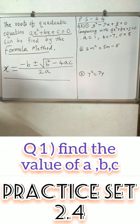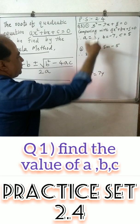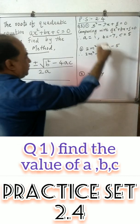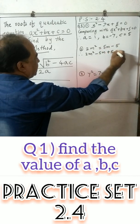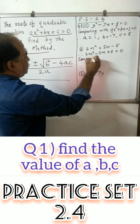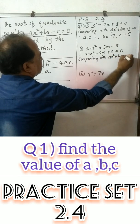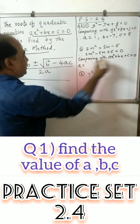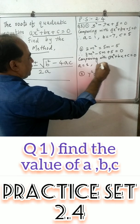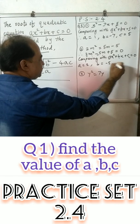Second example. We have to first arrange it in the standard form. So 2m² minus 5m plus 5 is equal to 0. Comparing with the standard form x² + bx + c = 0, we get: a is equal to 2, b is equal to minus 5, and c is equal to 5.